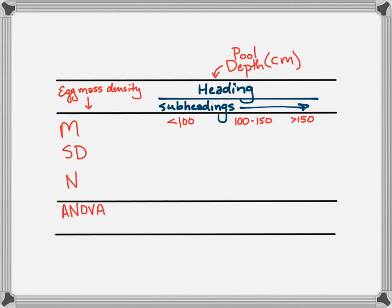The layout for ANOVA is similar, but now I'm comparing the means of more than two groups. Also note that I put the unit with the heading, so that I'm not listing it over and over and over in the subheading.